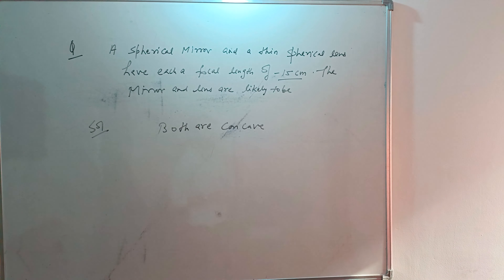Our next question is: a spherical mirror and a thin spherical lens each have a focal length of minus 15 cm. The mirror and the lens are likely to be — concave or convex? We're talking about a negative focal length of minus 15 cm, so what are they in nature?